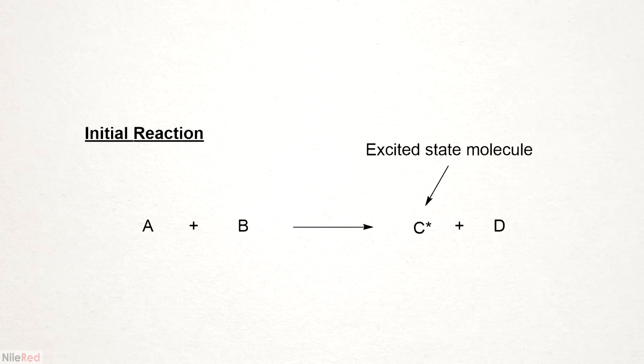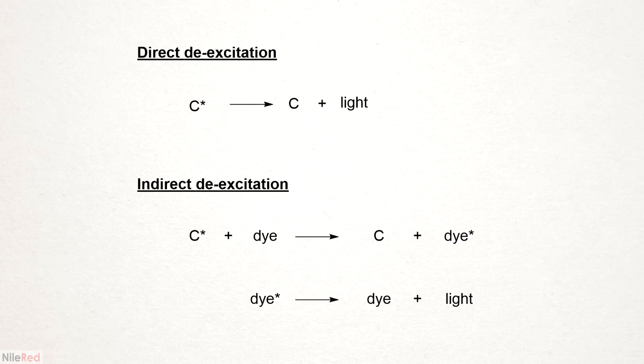The main driving force behind chemiluminescent reactions is the production of an excited or higher energy intermediate. This intermediate then relaxes to a lower energy level, and in doing so, it either directly emits light itself, or it transfers its energy to a secondary molecule which emits light for it.